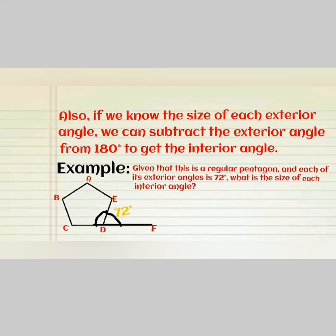Also, if we know the size of each exterior angle, we can subtract the exterior angle from 180 degrees to get the interior angle. Example, given that this is a regular pentagon and each of its exterior angles is 72 degrees, what is the size of each interior angle? The size of each interior angle would be 180 degrees minus 72 degrees, which would give us 108 degrees.